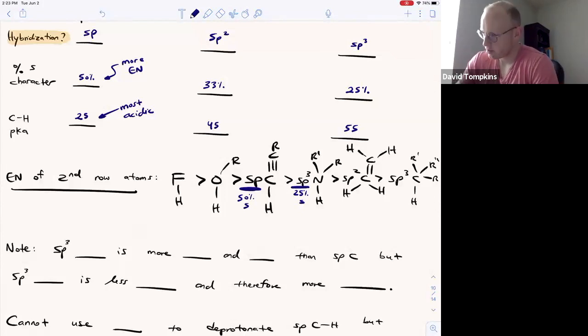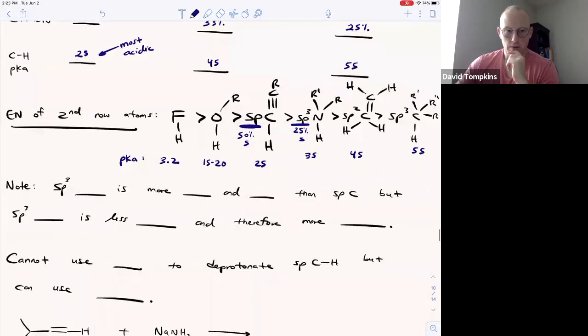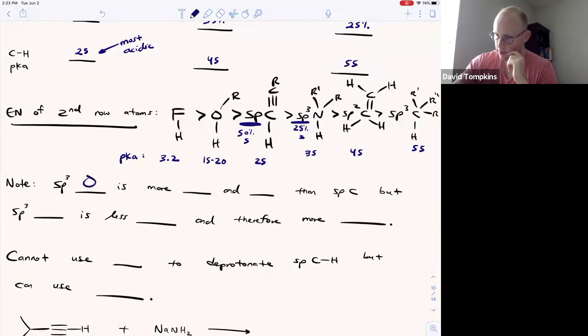And the pKa's are going to scale and reflect this. So the pKa of HF is around 3, an alcohol or water is between 15 and 20, an alkyne is about 25, an amine is in the mid-30s, an alkene is 40 or 45, and an alkane is as high as 55. So it's kind of a nice trend there where they increase by about 10 units in pKa after the alcohol. So note that sp3 oxygen is more electronegative and more acidic than sp carbon, but sp3 nitrogen is less electronegative than sp carbon, and therefore it's more basic.